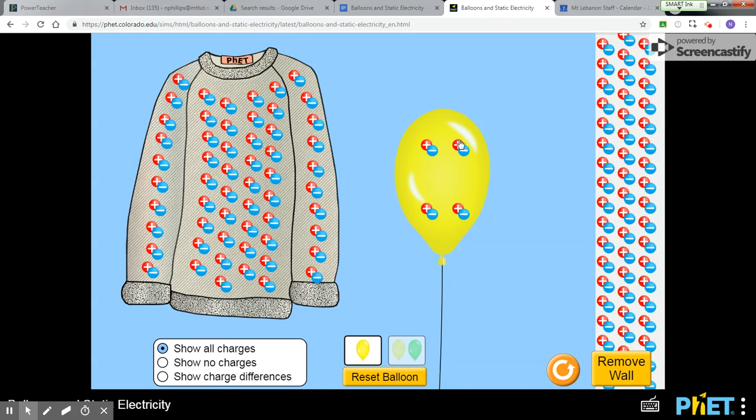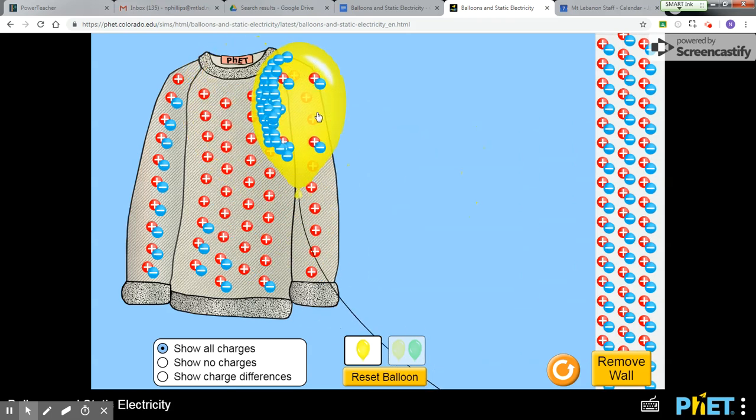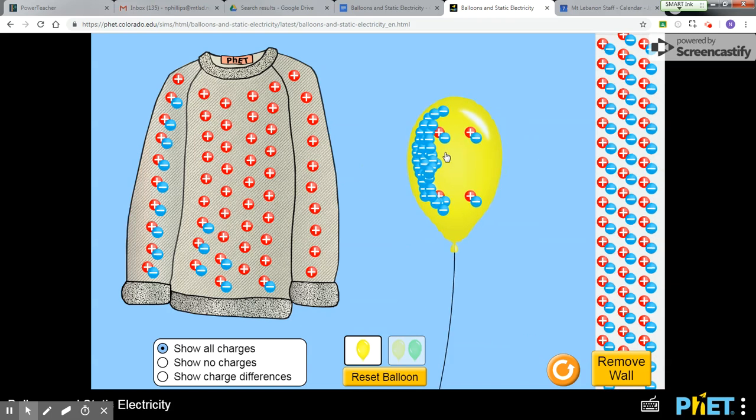Let's take a look at what happens between a negatively charged object, this balloon, and the neutral wall. Let's make our negatively charged object. We can do that by rubbing the balloon against the sweater. Now we have a negatively charged balloon. The sweater, because it gave its electrons to the balloon, is now positively charged.